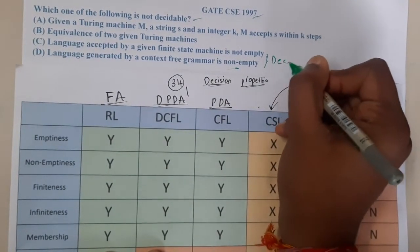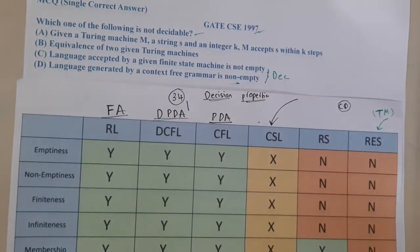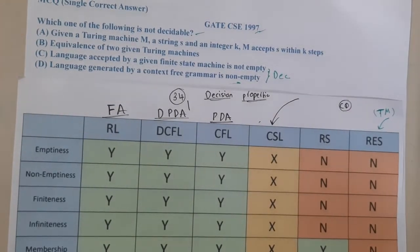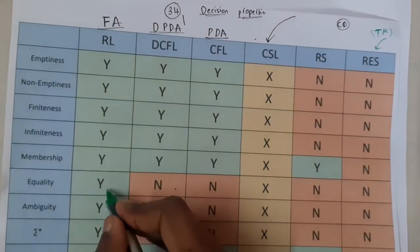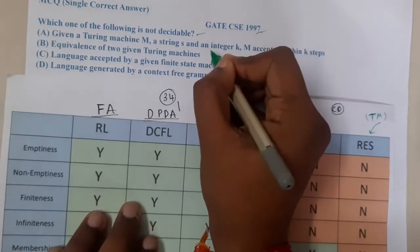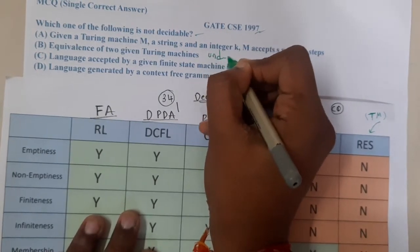When it comes to A and B, I am 100% sure that B is not valid because equality is only possible for regular expressions. For any other, it is not possible, so I am 100% sure that it is undecidable.